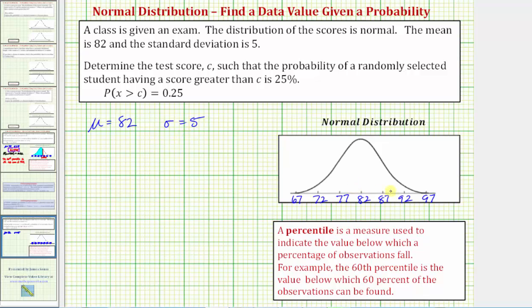the value of c we're looking for would be somewhere between 82 and 87. Let's approximate it to be here, where the probability that the test score is greater than c, or we can say to the right of c, is equal to 25 percent or 0.25.